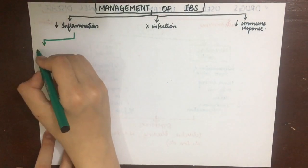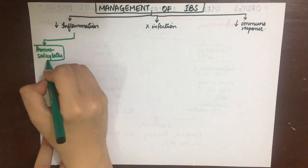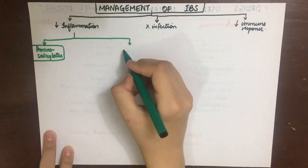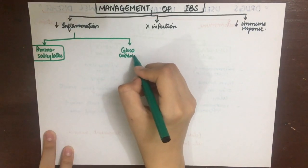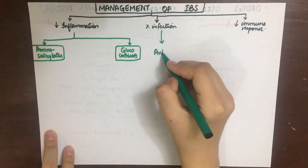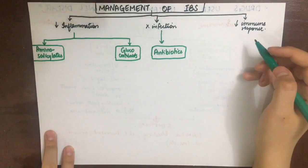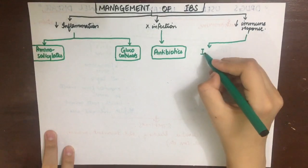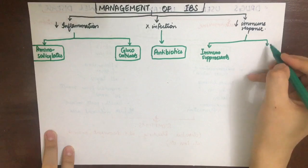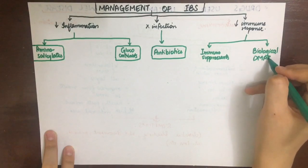To suppress the inflammation we use aminosalicylates and glucocorticoids. To treat infection we use antibiotics. To suppress the immunity of the patient we use immunosuppressants and biological DMARDs — the same ones used in rheumatoid arthritis, because that is also an autoimmune disease.